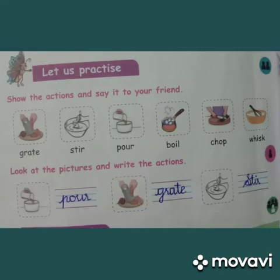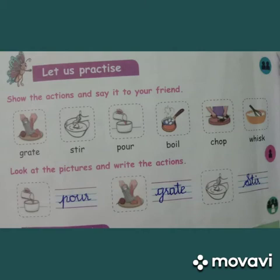Let us practice. Show the action and say it to your friend. Grate — G-R-A-T-E. Stir — S-T-I-R. Pour — P-O-U-R. Boil — B-O-I-L. Chop — C-H-O-P. Whisk — W-H-I-S-K.